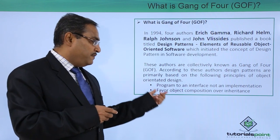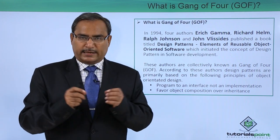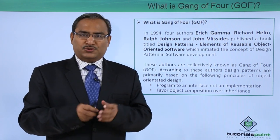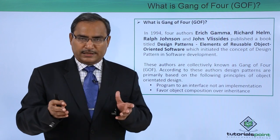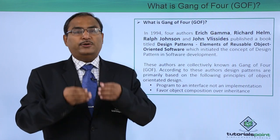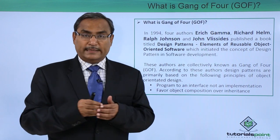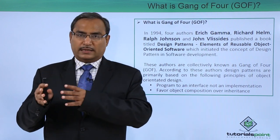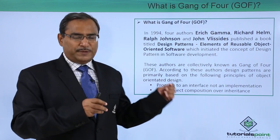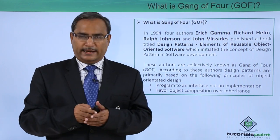The next principle is: favor object composition over inheritance. Two classes can get connected and related — they have relationships like 'is-a' or 'has-a.' 'Is-a' stands for generalization, meaning inheritance, where one class's properties get inherited into another class. In object composition, the object of one class is used in another class — that is known as 'has-a.' In design patterns, more emphasis is given to object composition over inheritance.